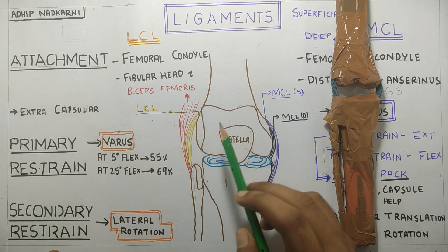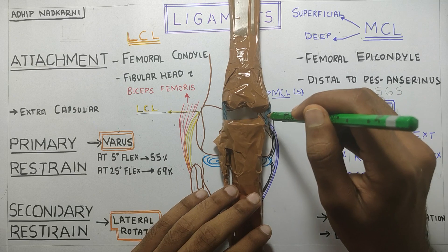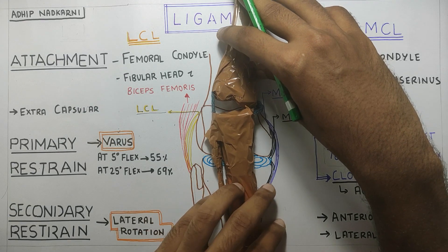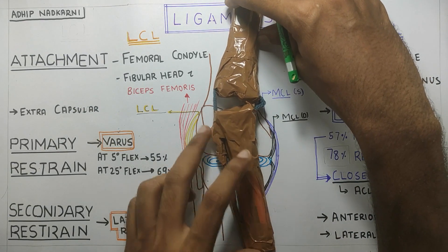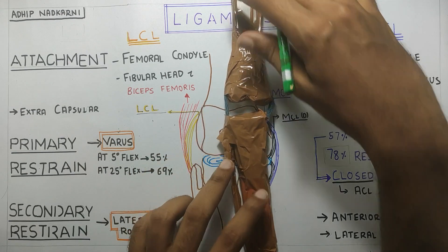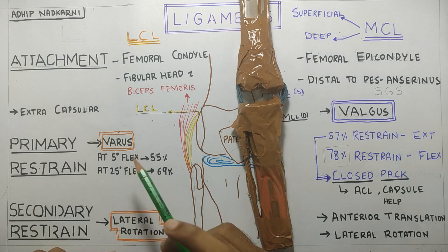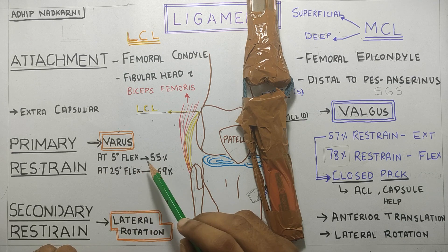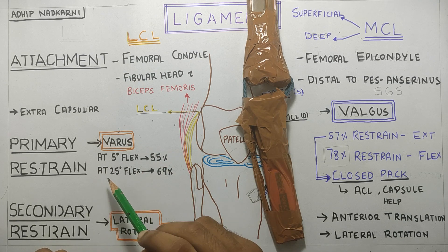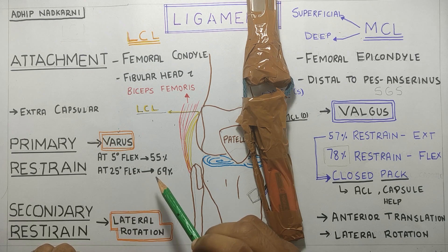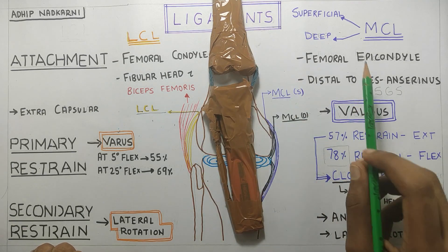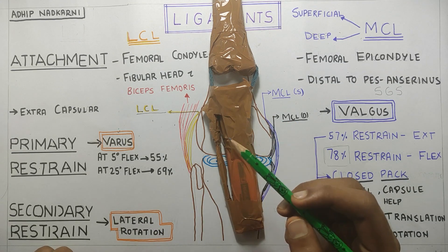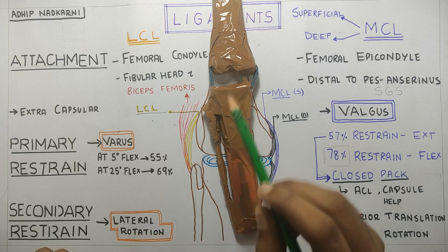The primary restraint for the lateral collateral ligament is varus force — if there is an outward force on your knee, you can see the lateral collateral ligament getting taut. This restraint varies with the degree of knee flexion: at 5 degrees of flexion it provides 55% of restraint, whereas at 25 degrees of flexion it provides 69% of restraint. Similar to MCL, as flexion increases, the restraint provided by the ligament increases because other structures can no longer stabilize the knee joint in flexion.